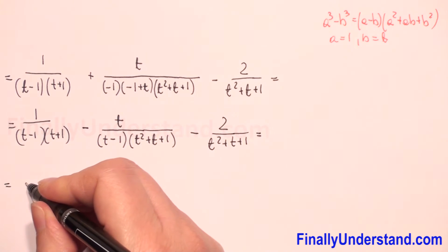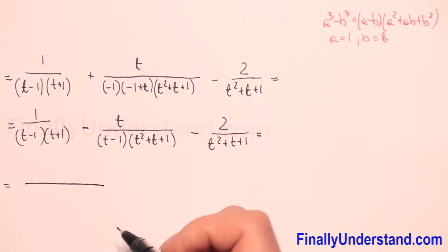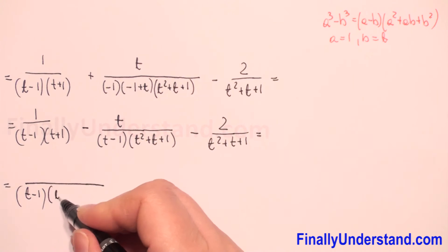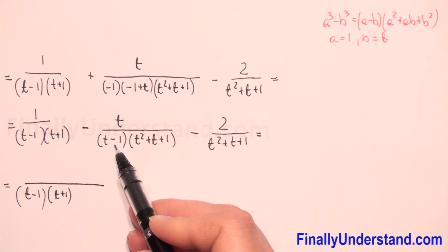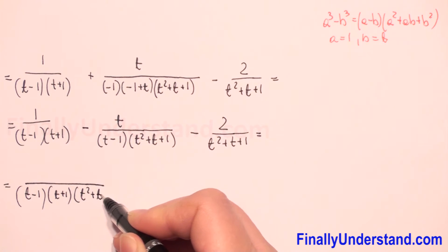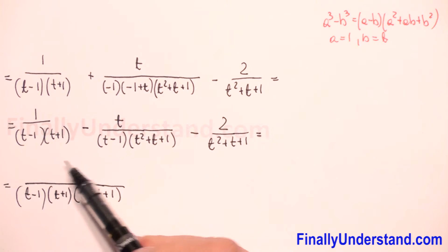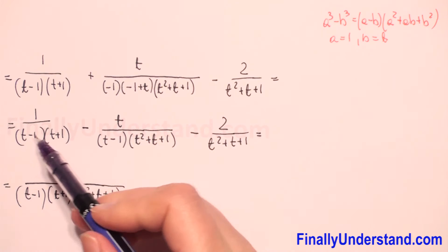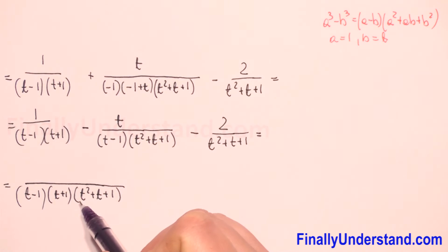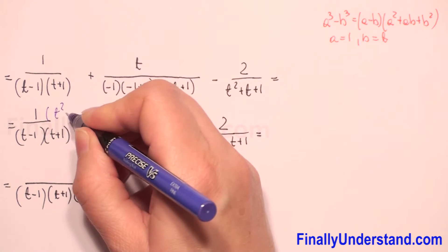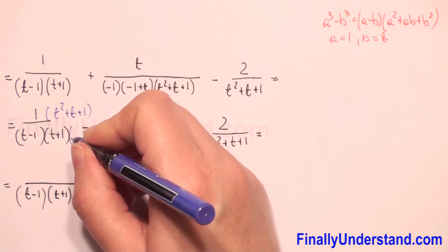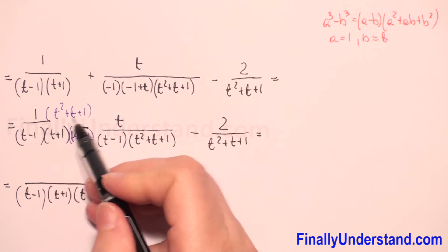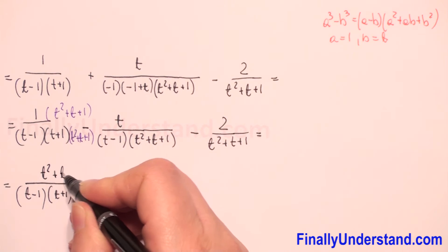Now we have t minus one, t plus one, and t squared plus t plus one as the factors in the denominators. So the common denominator must be t minus one times t plus one times t squared plus t plus one. For the first fraction we multiply numerator and denominator by t squared plus t plus one, so the numerator becomes t squared plus t plus one.